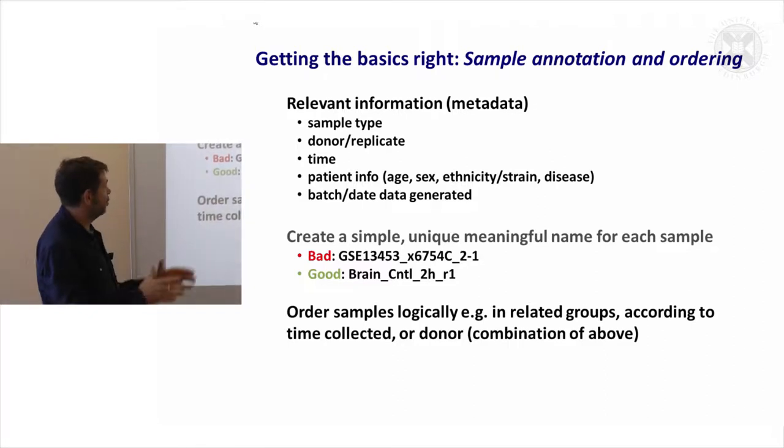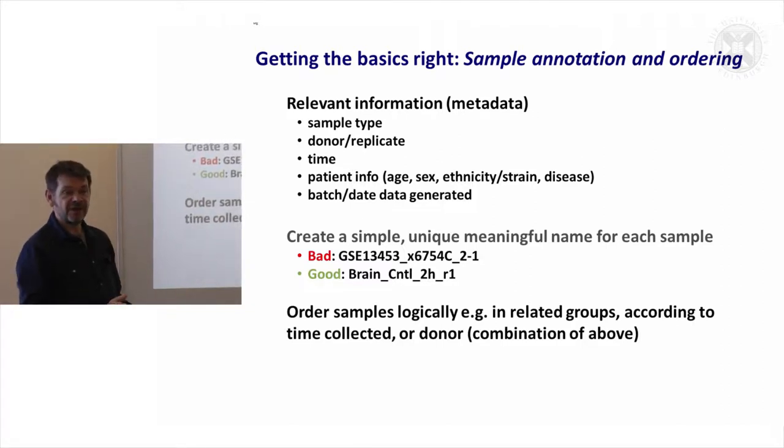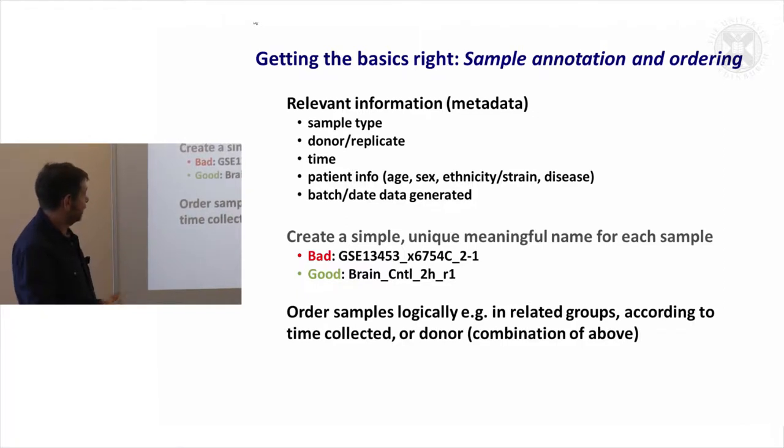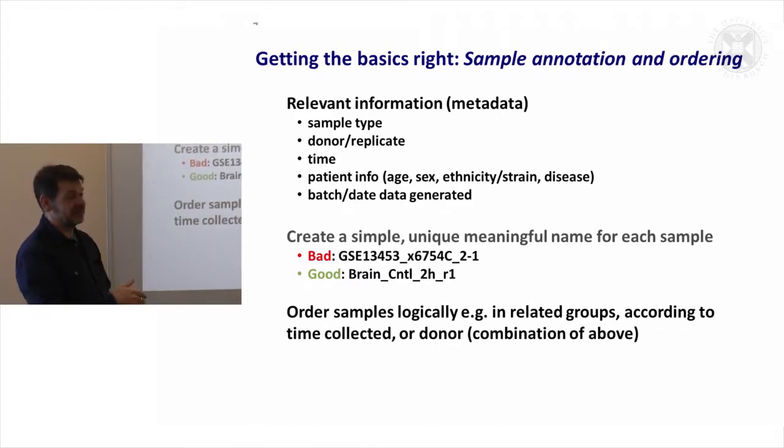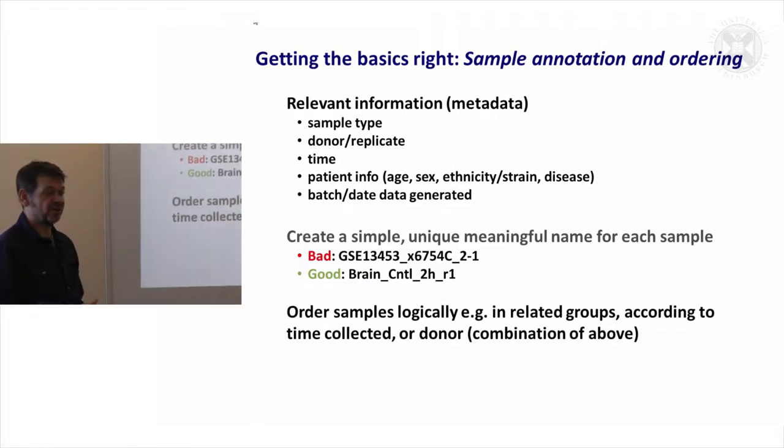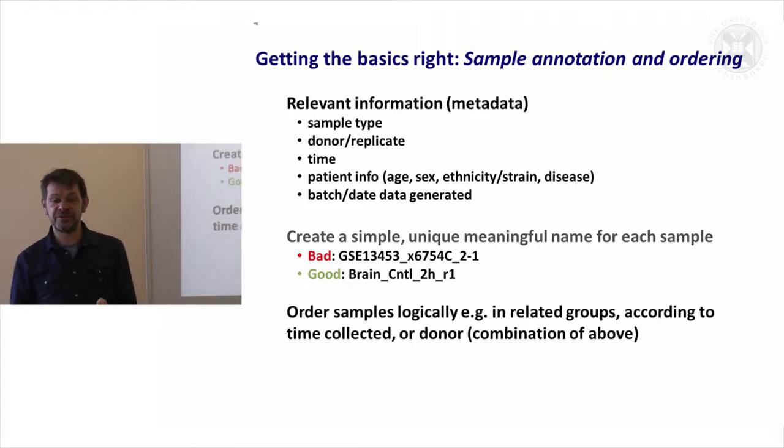Time, of course, is a variable which might often be in your data. Patient info - age, sex, ethnicity, strain, disease - these are all things that you often know about a sample. That's why you're analyzing them. The other important thing is the batch or the date the data was generated.